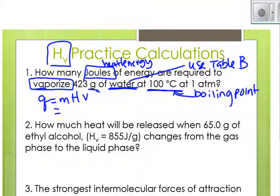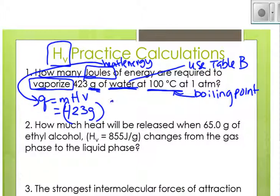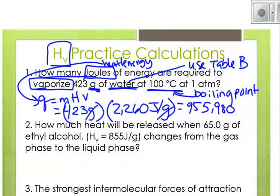So we have our equation Q equals mHv. Since the question is asking for how many joules, and we wrote that that's the Q, Q is our X. So it's equal to the mass. We underline grams because that's the unit for mass. 423 grams times the heat of vaporization, which we could find on the front of the reference table, 2,260 joules per gram. We plug that into our calculator, and we get 955,980 joules because we were calculating the heat.